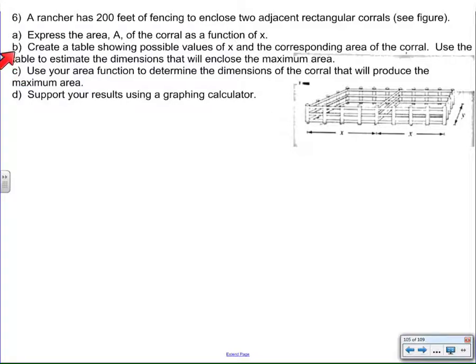For example, I can create a table of values so I can kind of guess and check and see how changes in the values of x will affect the area. And then maybe find out where the maximum is before I even do anything in part c, which part c says use the area function to determine the maximum area and the dimensions of the corral that would produce that maximum area. So that's that finding the vertex kind of question, and then use technology to support your results. So now I know where I'm headed.